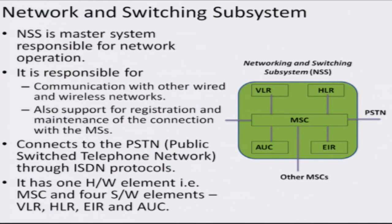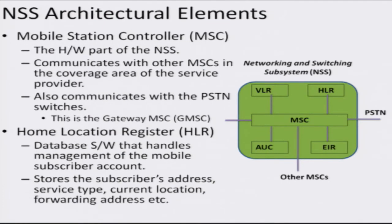The heart of the mobile network is the Network and Switching Subsystem, which is responsible for a variety of operations: communication with other networks and operators, registering, validating, and authenticating users, registering the whereabouts of a user, handling roaming, and connecting to other networks such as the internet or the landline network. It includes the MSC — Mobile Switching Center — which controls all modules. The Home Location Register is a software database that stores subscriber account information including address, type of service, current location, and forwarding address if the user is roaming in a different cell.